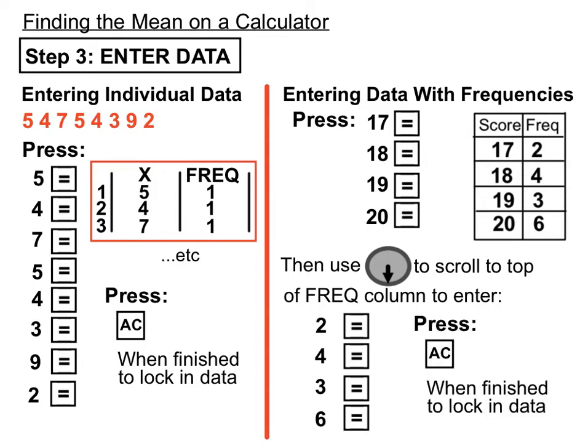That will be assigning frequencies to each of the scores we've already locked in. Once we've done that, we'll again press all clear to lock in any data, whether it's individual data or data with frequencies. We must remember to press AC to lock that data in. Don't be worried that the screen might go all clear or blank; it has locked in that data.